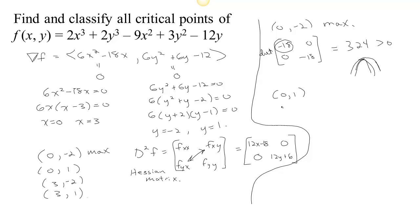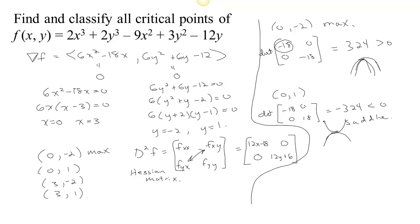Case 2: at the point (0, 1), with x equals 0 we again get negative 18, and with y equals 1 we get 12 plus 6 equals 18. The determinant is negative, so we have a saddle. Since the off-diagonal terms are 0, it's easy to see the function is concave down in the x direction but concave up in the y direction — essentially a hyperbolic paraboloid. So we have a saddle at this point.